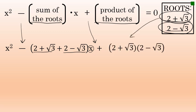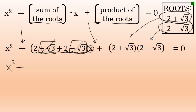The product of the roots is 2 plus the square root of 3 times 2 minus the square root of 3, and this equals 0. Combining the like terms in the sum of the roots: the irrational parts, plus the square root of 3 and minus the square root of 3, add up to 0. So this term becomes simply 2 plus 2, which is 4x.